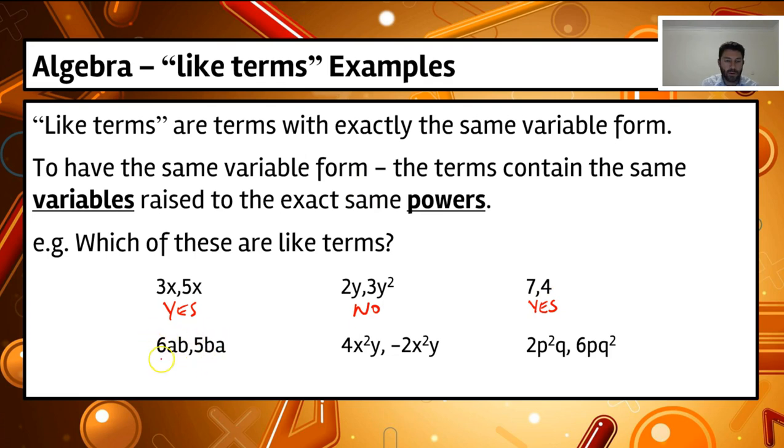Down here, we've got 6ab and 5ba. Now, let's have a look at the letters. We've got a and b in this term, and we've got b and a. So we've actually got the same letter combination, doesn't matter what order they're in. So these ones here, yes, these ones are like terms.